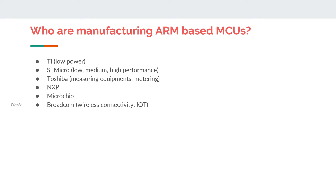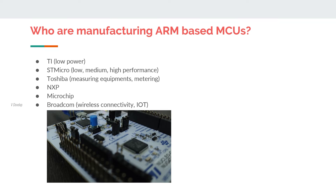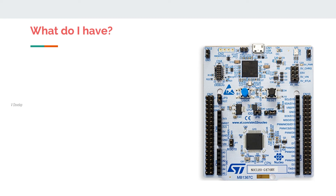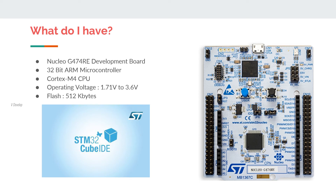In the upcoming videos, we will try some hands-on projects with an ARM-based microcontroller. If you would like to join, you can purchase any ARM-based microcontroller, because the programming strategy is almost similar in all ARM-based MCUs. If you purchase an STM32 development board like a Nucleo or Discovery, you can easily relate to what I am demonstrating. Here, I am using the Nucleo G474RE development board, which incorporates the STM32 G474RE microcontroller — a 32-bit ARM microcontroller that follows Harvard architecture and has a RISC instruction set. We will be using STM32CubeIDE to write and download our program into the development board.